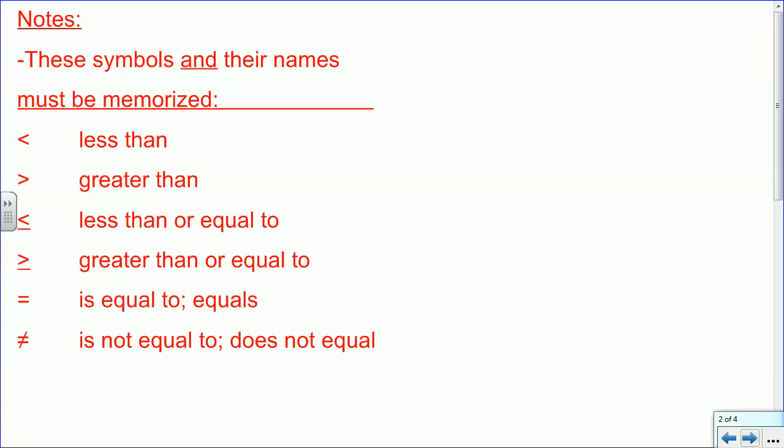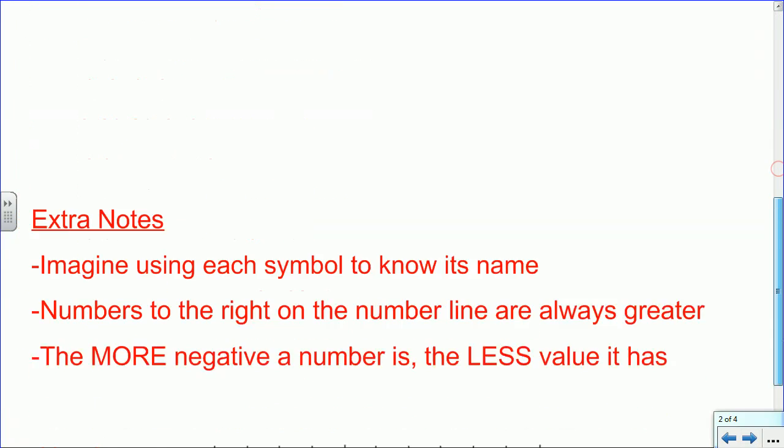And then finally, for real finally, we have a new symbol that is not equal to or does not equal. So sometimes we're writing expressions where, like, the number of hours of sleep I got last night was not 7, so s, a variable for sleep, would be not equal to 7. P.S., it was like 12. So let's get some more notes.